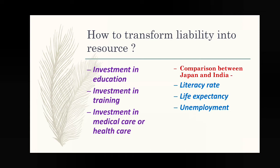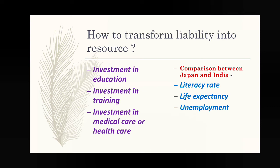We also compared Japan and India — why Japan is a developed country and India is a developing country. There are huge differences in literacy rate (education facilities), life expectancy (healthcare facilities — meaning how many years a person is expected to live), and unemployment. These are the things we already discussed. Today we will discuss two stories: the story of Sakal and the story of Bilas.